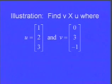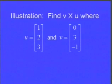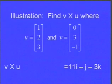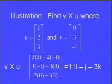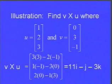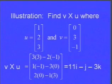Let's illustrate the first property: v cross u should be the negative of u cross v. We know u cross v = (−11, 1, 3), so v cross u should be (11, −1, −3). Plugging v = (0,3,−1) and u = (1,2,3) into the formula: first component 3·3 − 2·(−1) = 11; second component 1·(−1) − 3·0 = −1; third component 2·0 − 3 = −3. Sure enough, v cross u = (11, −1, −3), which is the negative of u cross v.